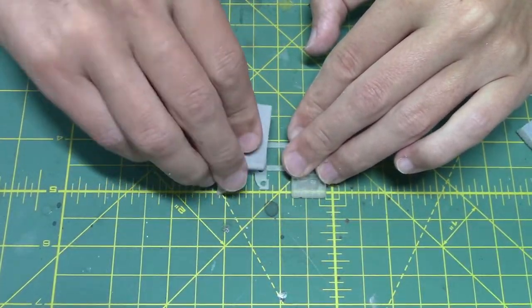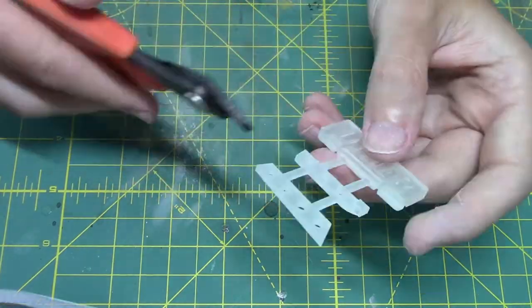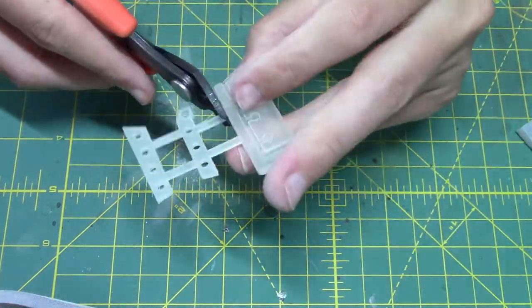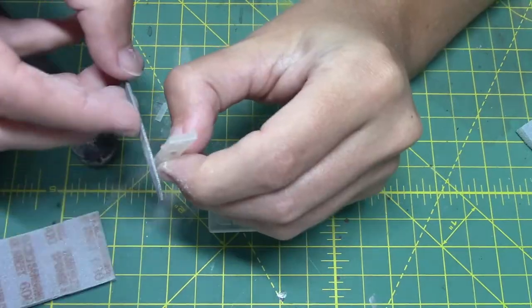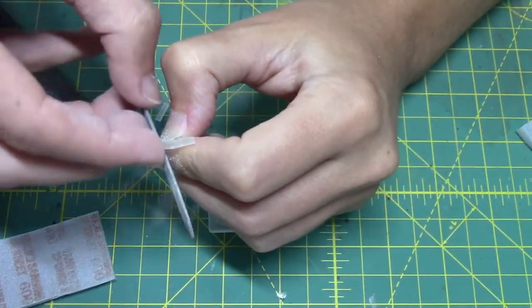I start with sanding and cutting each part. Even with the fine, detailed material, there are still small lines in the print that need to be sanded smooth.